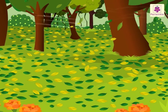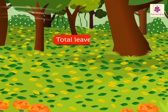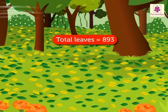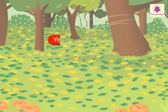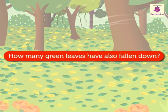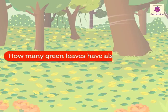Look, the leaves are falling. There are eight hundred ninety-three leaves on the ground, but only four hundred fifty-six leaves are yellow. How many green leaves have also fallen down?